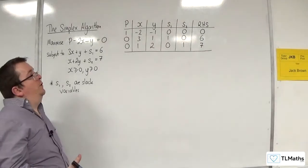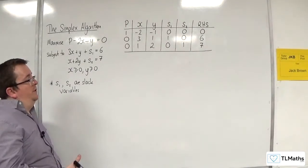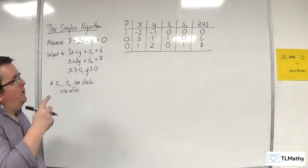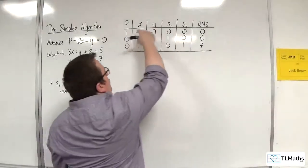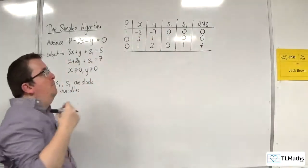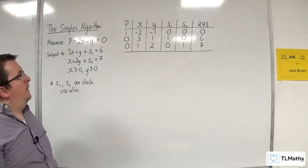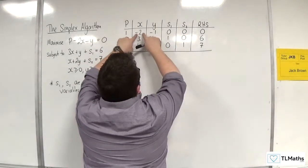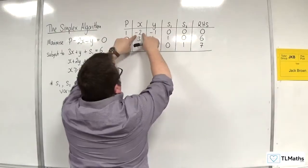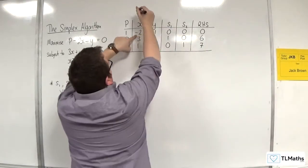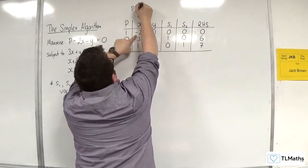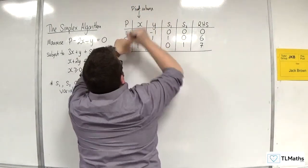The next thing we need to do is choose a pivot. So how do we do that? Well, what you do is you look along your top row, and you look for the most negative number. So the most negative number in our case is the minus two. So we have the minus two, the minus one, minus two is the most negative. And so this becomes what's referred to as your pivot column. So that's the pivot column in this case, in this first iteration.